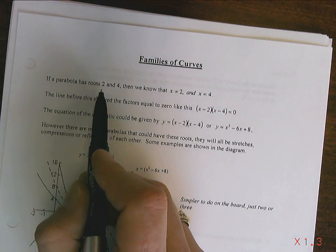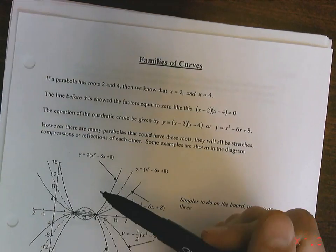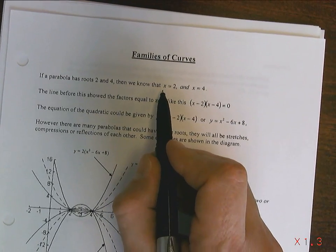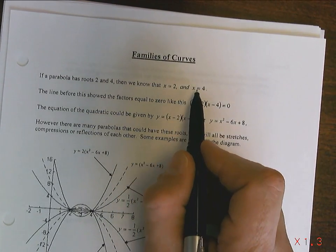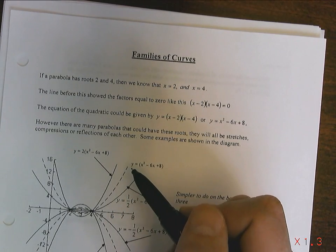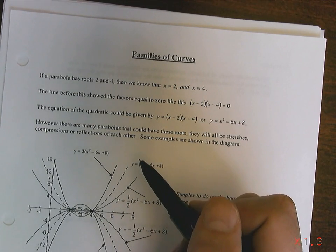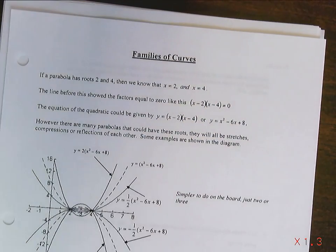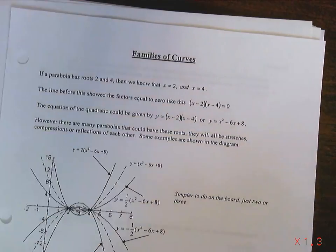Let's take a look. If a parabola has the roots 2 and 4, then we know that means x equals 2 and x equals 4 were values that allowed the equation to equal 0. So if that's true, then if I think about it, x equals 2 and x equals 4.